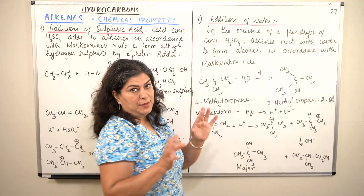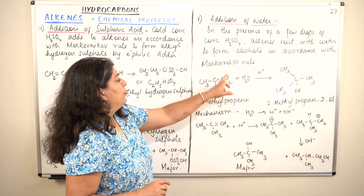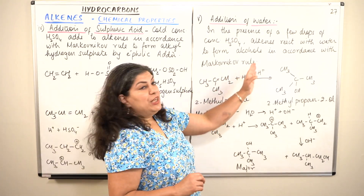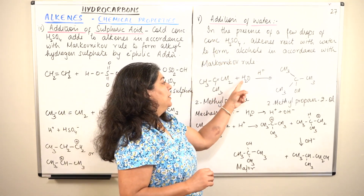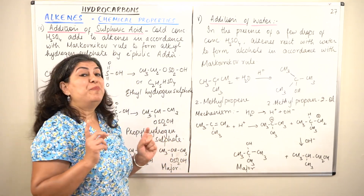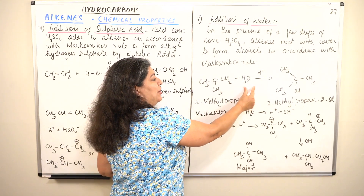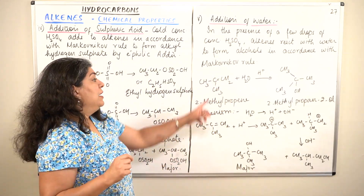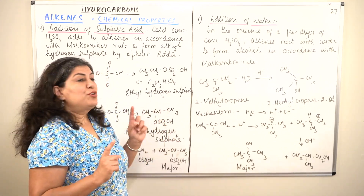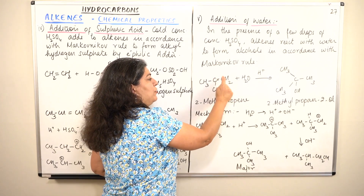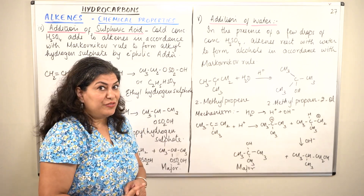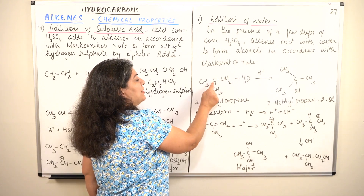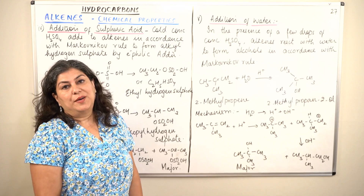This is an unsymmetrical alkene — on one side of the double bond you have one carbon, and on the other side the carbon is attached to two other carbons. When water adds to it in an acidic medium, H⁺ and OH⁻ will add. According to Markovnikov's rule, which carbon does the negative part add to? This carbon is attached to two hydrogens, but this carbon has no hydrogens. The negative part of the addendum adds to the carbon with the lesser number of hydrogens, so OH⁻ adds to that carbon.